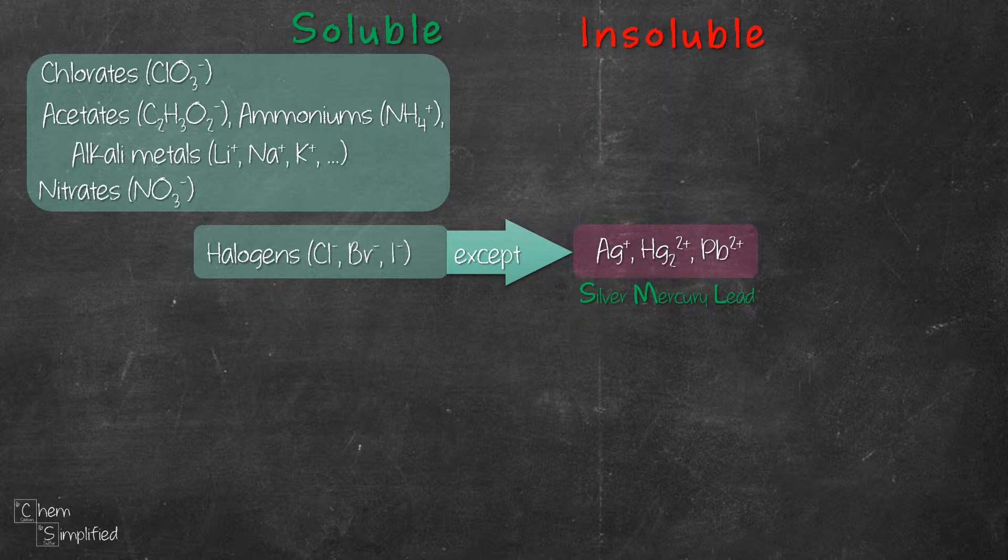That means, BaCl2, for example, will be soluble. However, mercury bromide, Hg2Br2, will be insoluble because mercury is part of the exception.